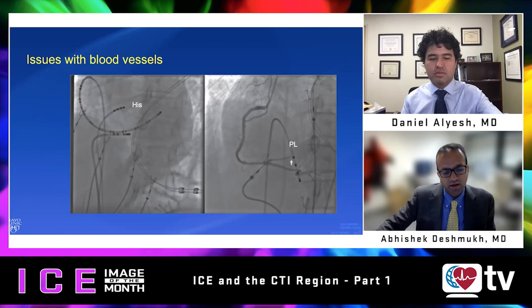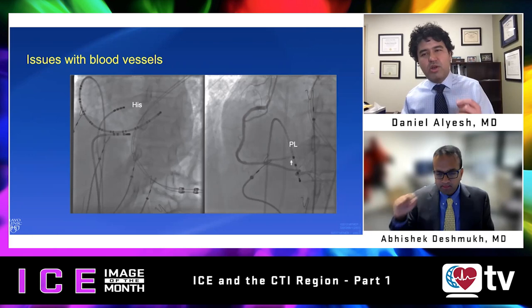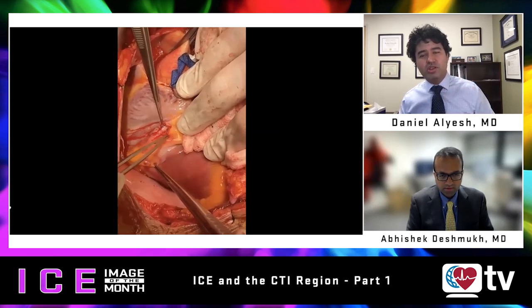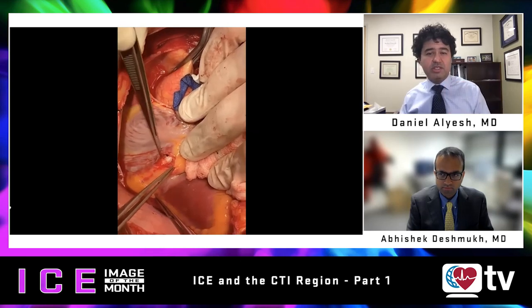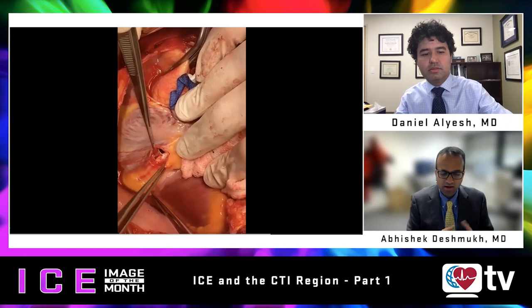This could also occur due to a ganglion effect and vasovagal reflex in that area — something to think about. The course of the right coronary artery is very well visualized on ICE. This video came from Twitter, where they were performing bypass surgery and pointing out a very endocardial course of the RCA, which can vary significantly. Knowing the course of the right coronary artery as it applies to the CTI region can be very helpful.